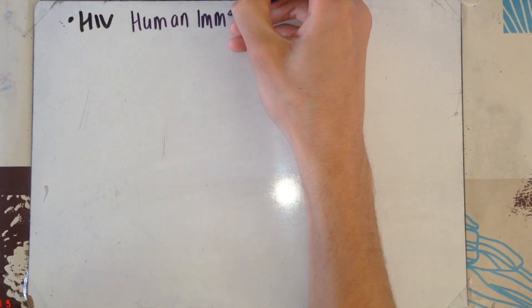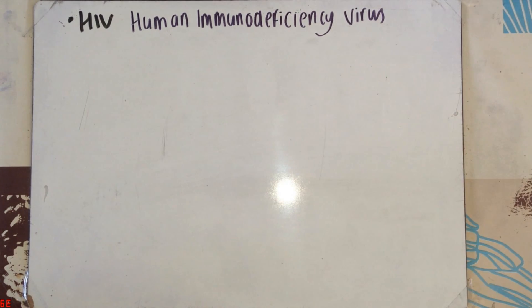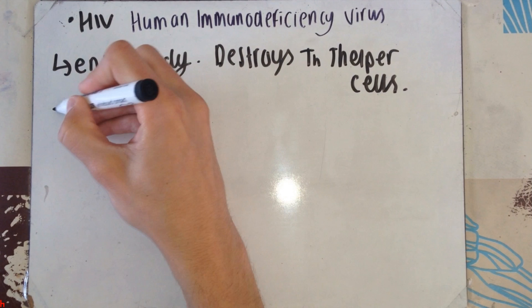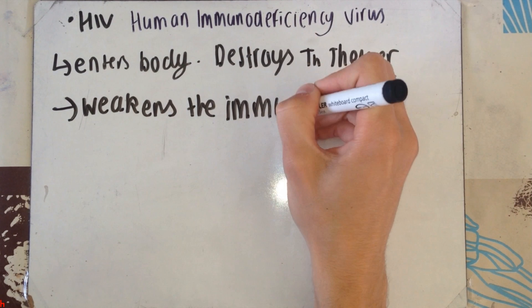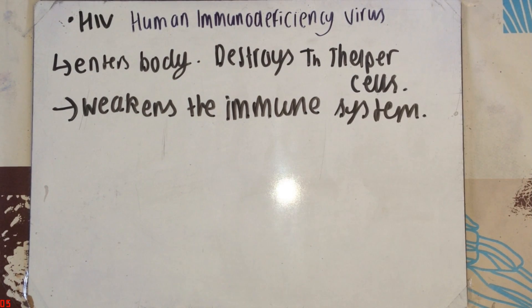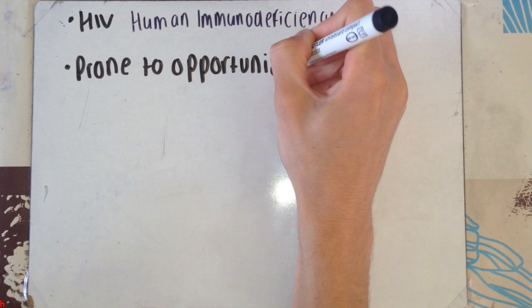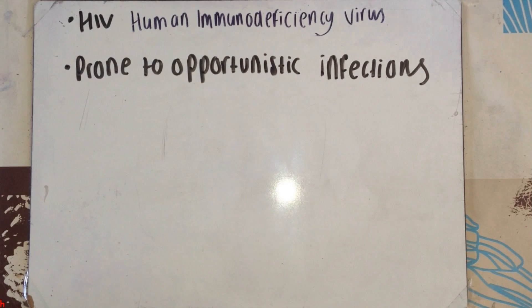Now we're going to talk about the diseases themselves and their transmissions. First up, HIV. Human immunodeficiency virus. This virus enters the body and the cells it goes to are the T helper cells. In these cells, it replicates itself, bursts out, and destroys these cells in the process. This weakens the immune system greatly. This then makes you prone to opportunistic infections. These are infections that rely on the fact that you've got a weakened immune system and make it easier for them to get into the body.